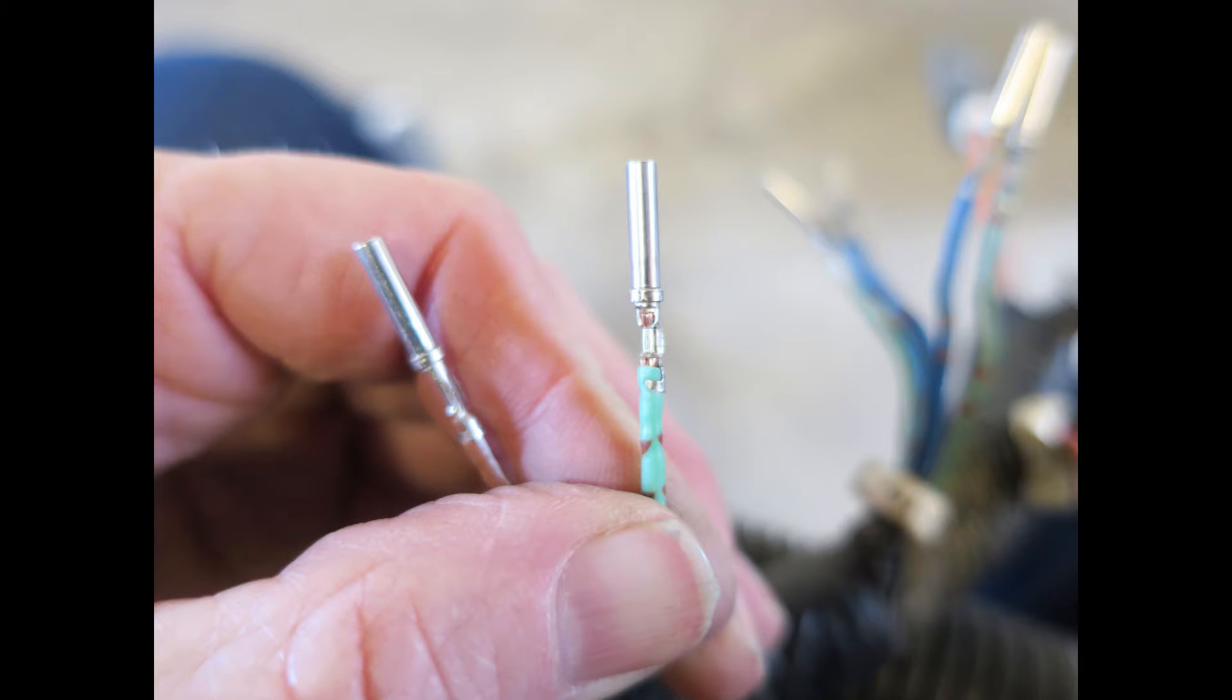The wire connection ends look similar to any that you will see for any make of open barrel terminal. They have two or more wings that are bent down and compressed into the bare wire for the crimp.